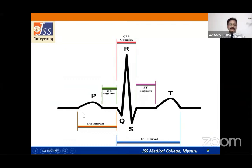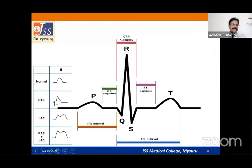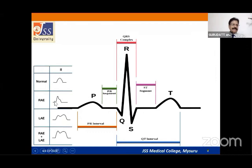Going through ECG waves systematically: the P wave represents atrial depolarization and should be upright. Always check if the P wave is present or absent, normal or abnormal, and whether it comes before the QRS complex. In right atrial enlargement — also called P pulmonale — the P wave voltage increases, with amplitude more than 3 millimeters vertically.